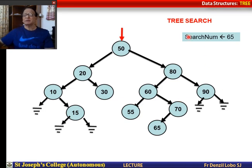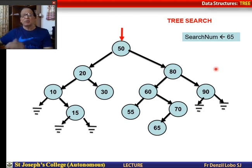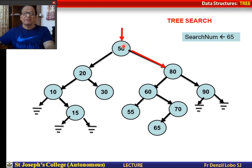Here we have an example. I have a binary search tree with numbers already loaded and I want to search for 65 in this binary search tree. Let us see how we begin. We always begin with the root of the tree. I come to the root of the tree and ask: is search number 65 greater than 50? Yes, then I start searching the right subtree.